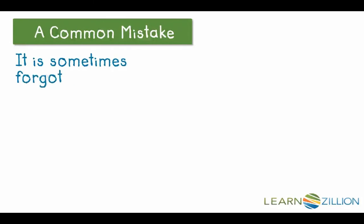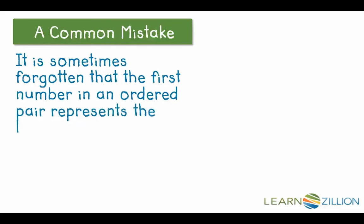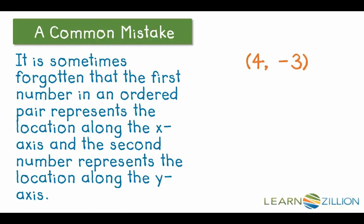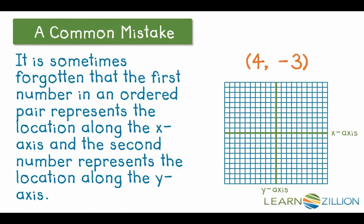A common mistake is that it is sometimes forgotten that the x-axis is the first number in an ordered pair and the y-axis is the second number in an ordered pair. So if we have 4 and negative 3, the x-axis would be 4 and the y-axis would be negative 3. So we need to start by going right 4 on the x-axis, and then for negative 3 that means we are going down 3 along the y-axis. So that star represents the location of our point.